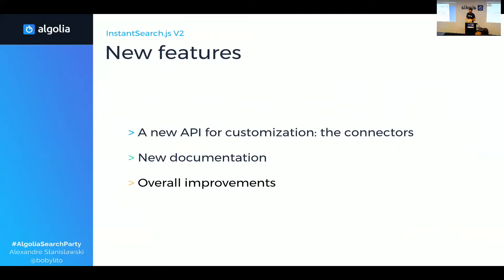In this v2, we have three main parts. First is the connectors — an intermediate API for customization of the widgets. The second part is the new documentation: we want to make sure that everybody can go from apprentice to master on the smoothest path possible. And overall, we want to make improvements to make the project future-proof. But first, let's dig into this new customization API.